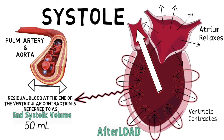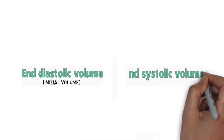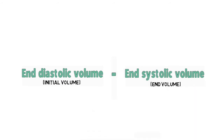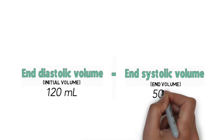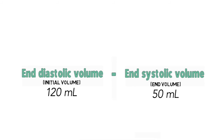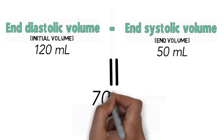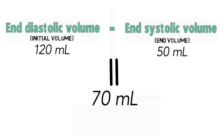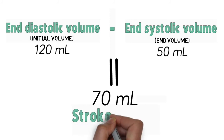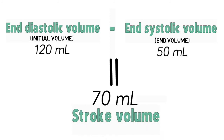Now that we know how much volume we begin with and how much we end with, we can calculate the difference — that's how much blood is being put out per beat. The end diastolic volume, which is the initial volume, is 120 ml, and we're left with 50 ml, which is the end systolic volume. The difference between them is 70 ml, and that 70 ml is referred to as the stroke volume — how much blood is being put out per beat. We'll talk about stroke volume in another video when we discuss cardiac output.